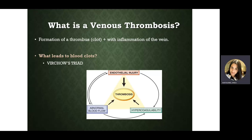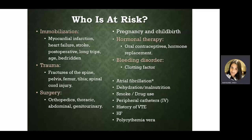A couple of things that lead to a clot are blood pooling or blood stasis, an increase of blood coagulability, and whenever there's an injury within a vessel or vein it tries to heal itself, leading to an accumulation of platelets and other factors which can lead to a clot.